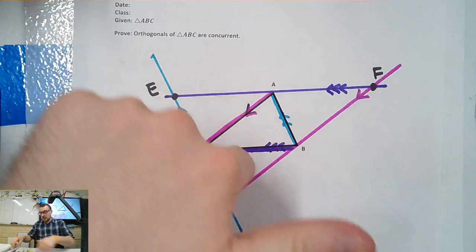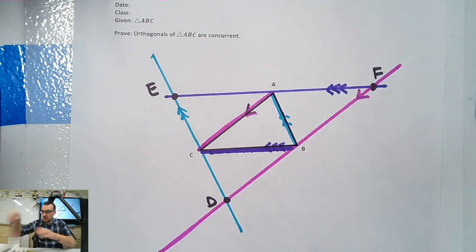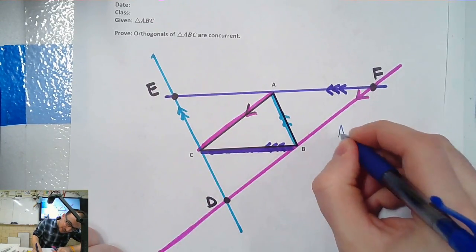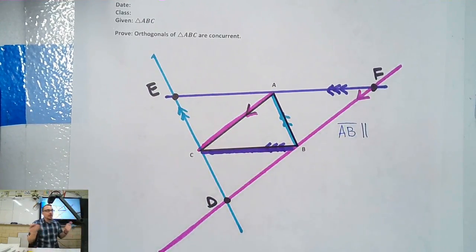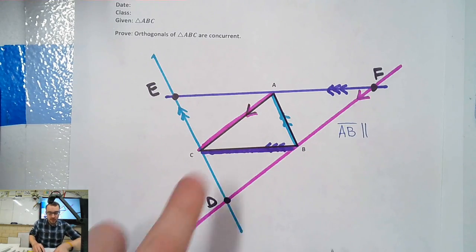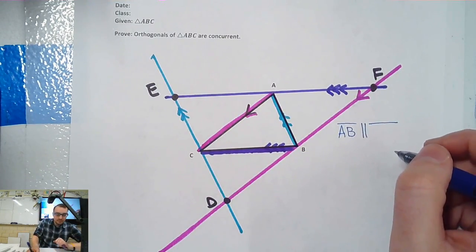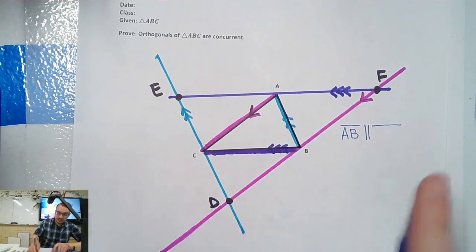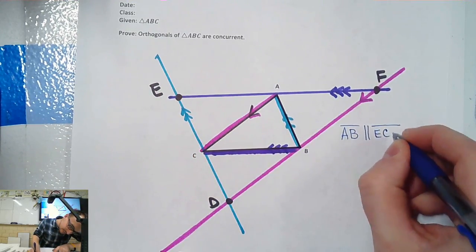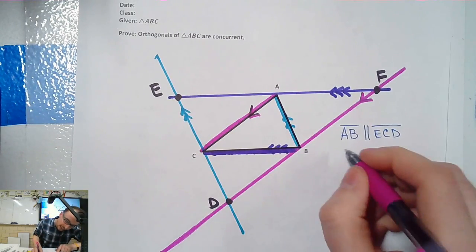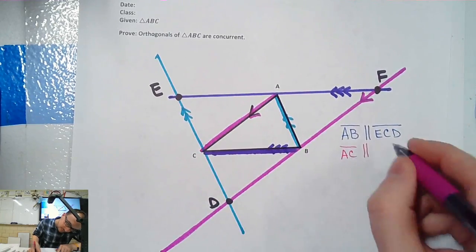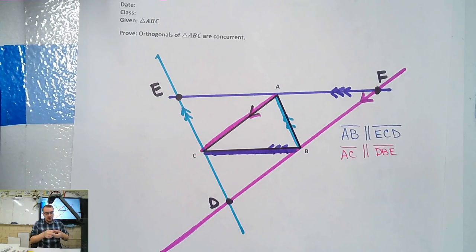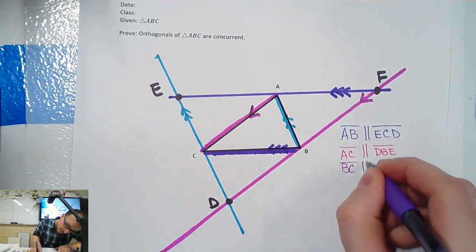Now let's write this out. I need pink, purple, and blue. Let's talk about the blue ones first: I made a line parallel to A, B — parallel to E, C, D. What is A, C parallel to? D, B, E — wait, it's F. So AC is parallel to D, B, F. And then B, C — I made that parallel to E, A, F. So let there be these three parallel lines.